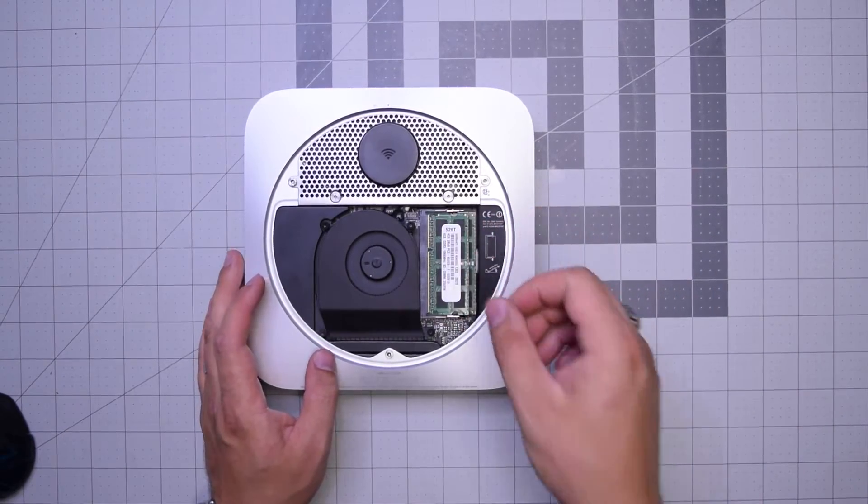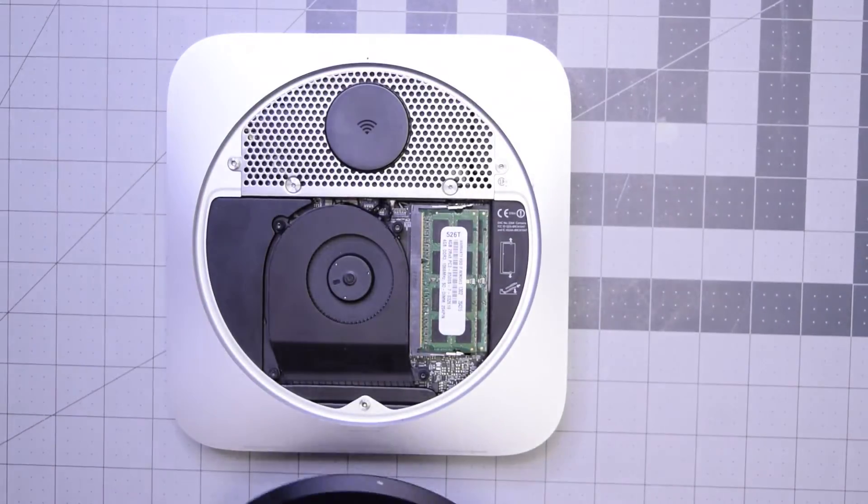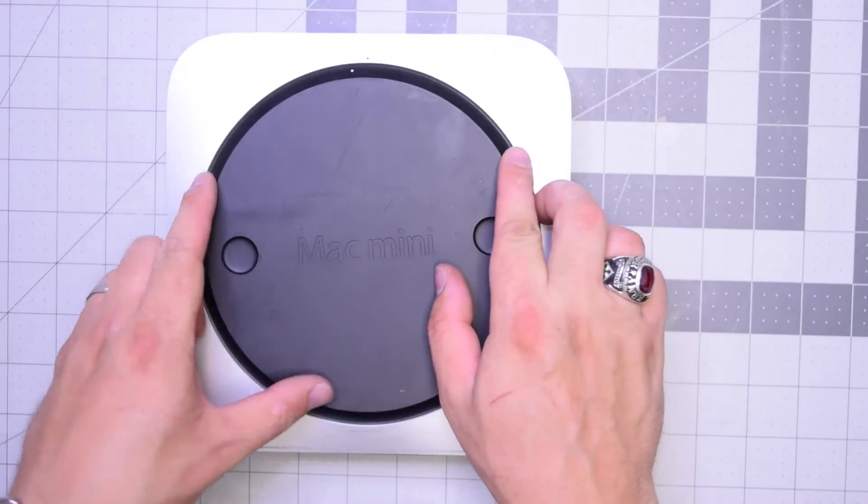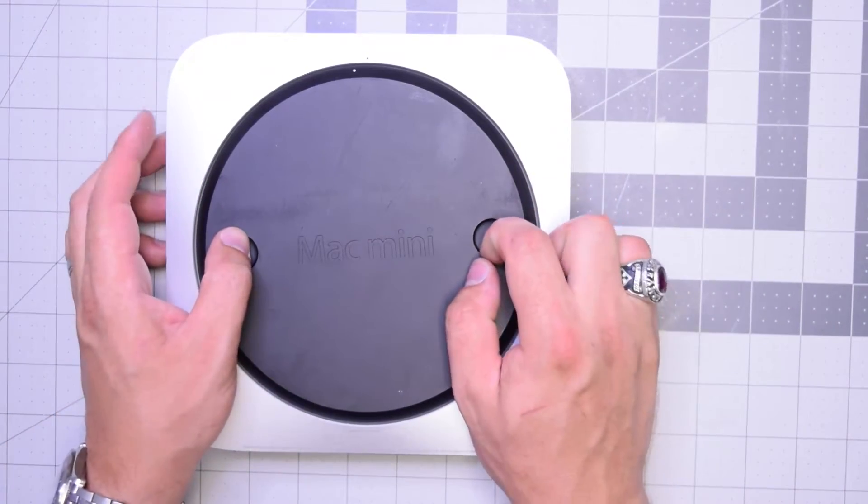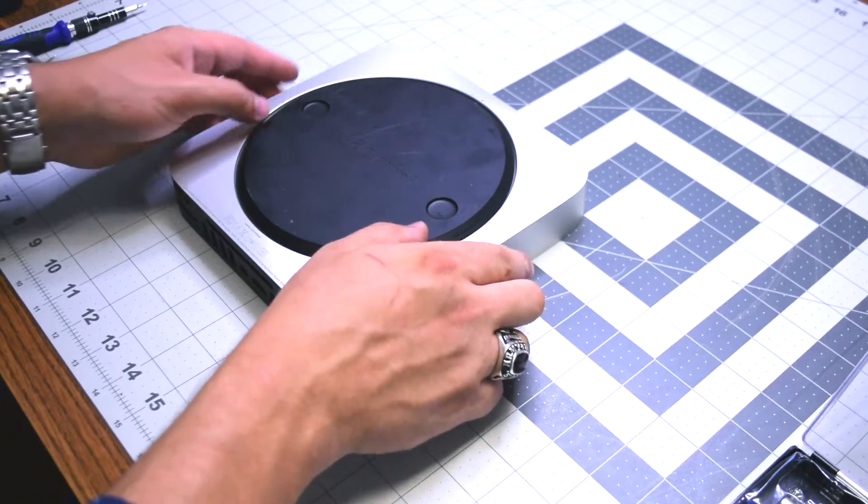Same thing for the top unit. That's it. We can now go ahead and put the top cover on at an angle first, and then twist it into its locking position.